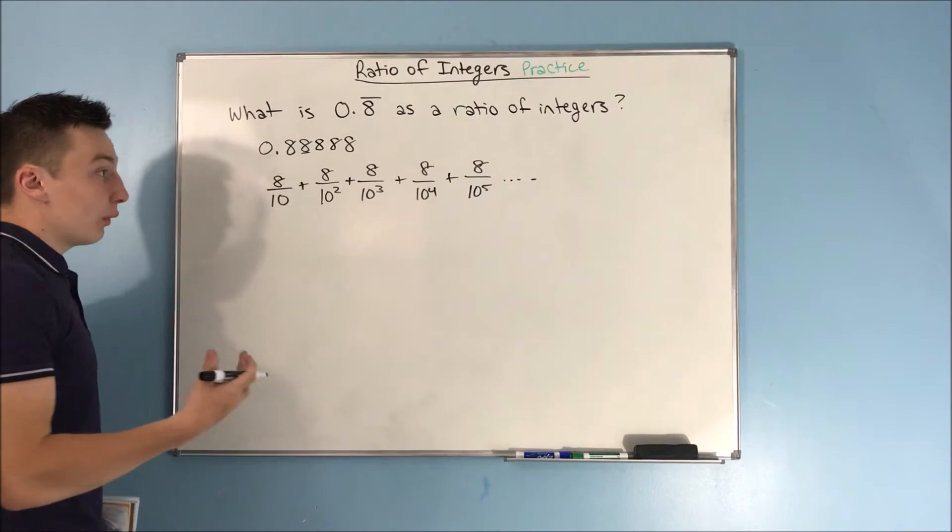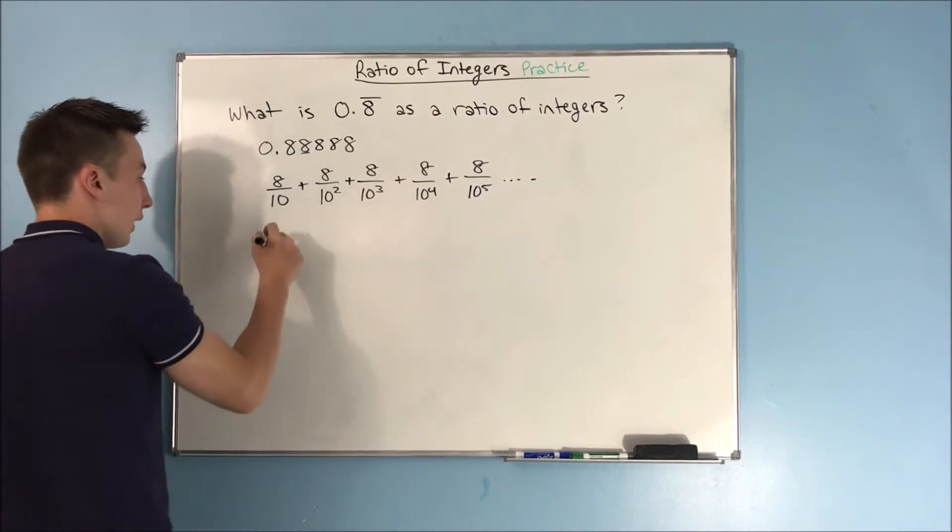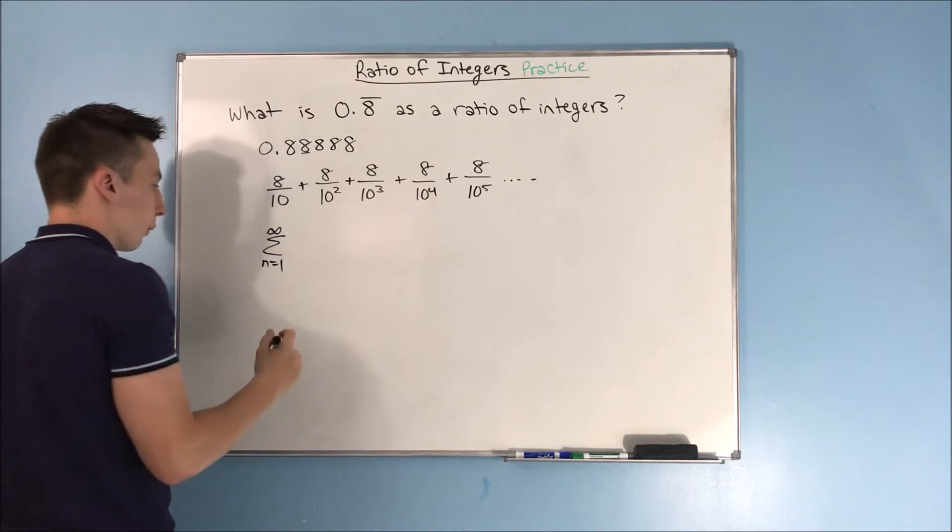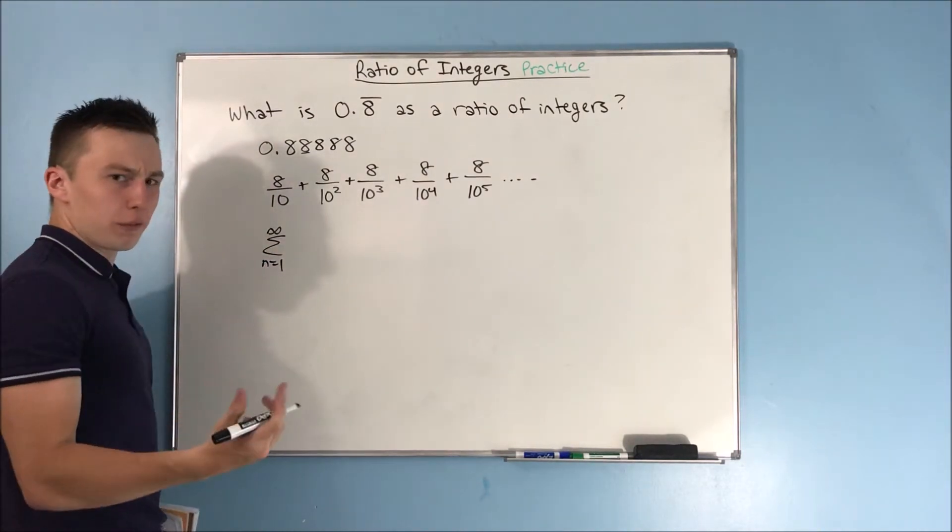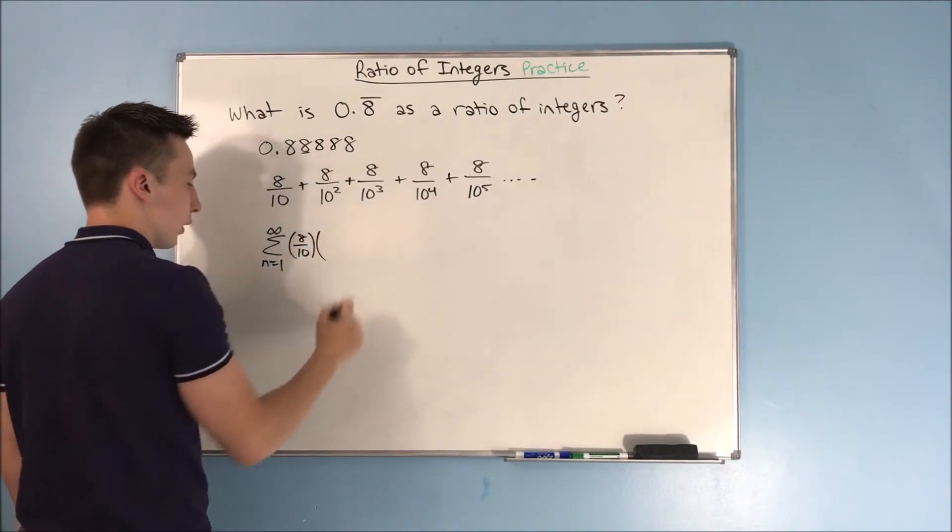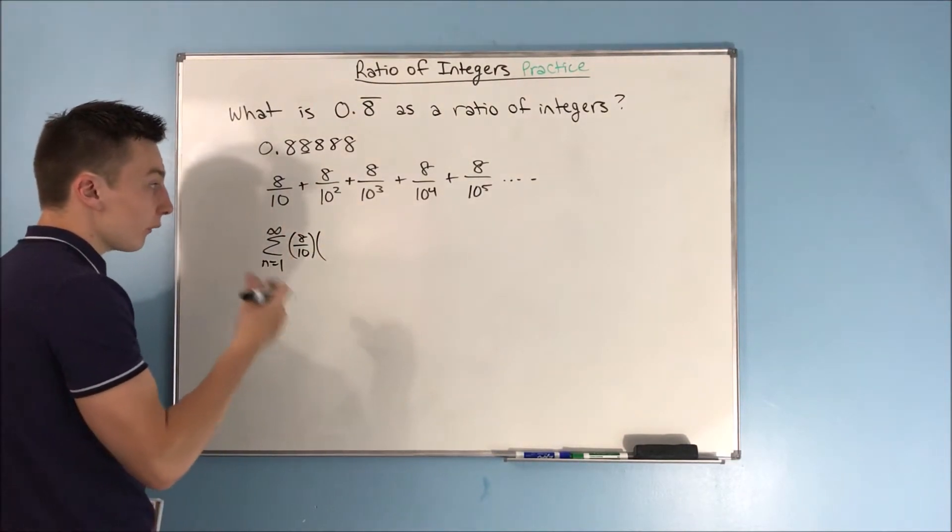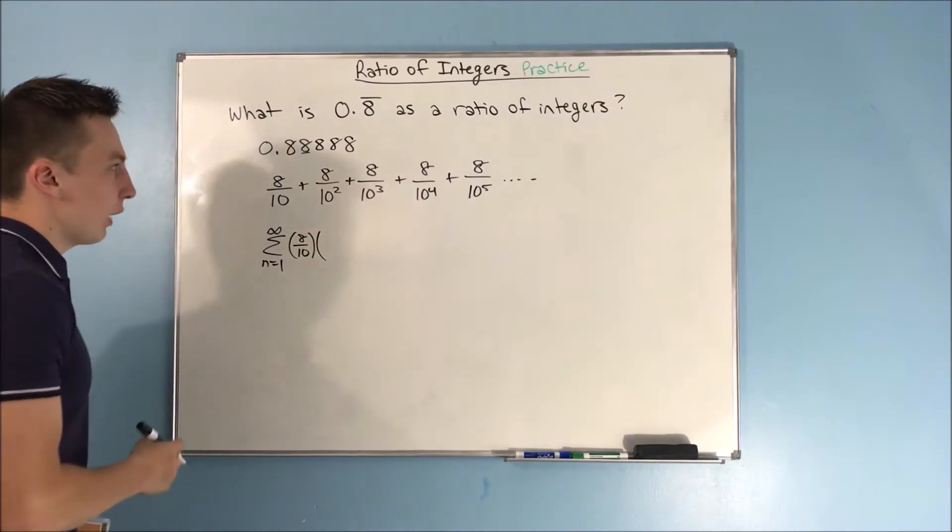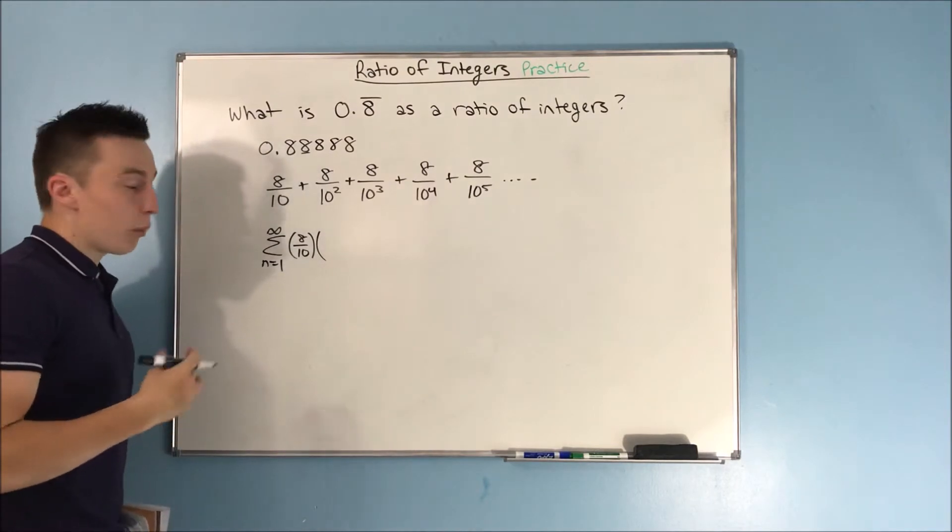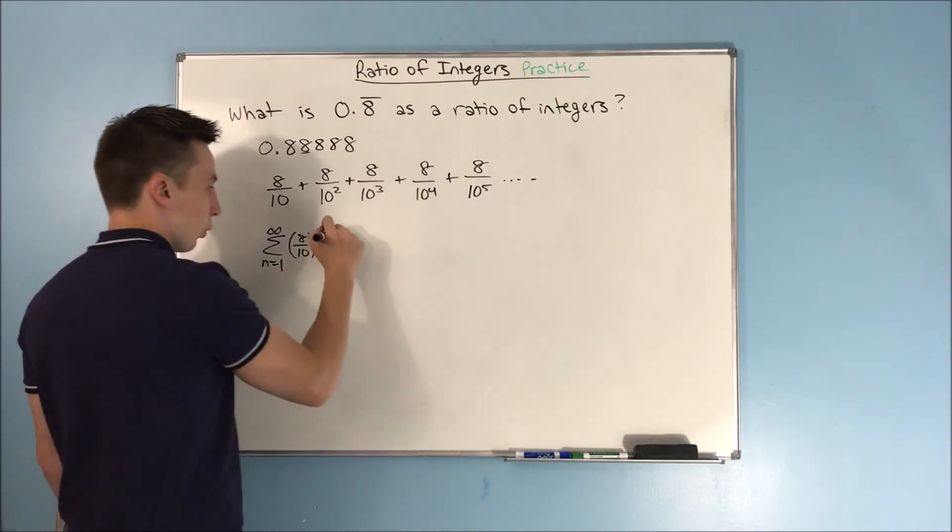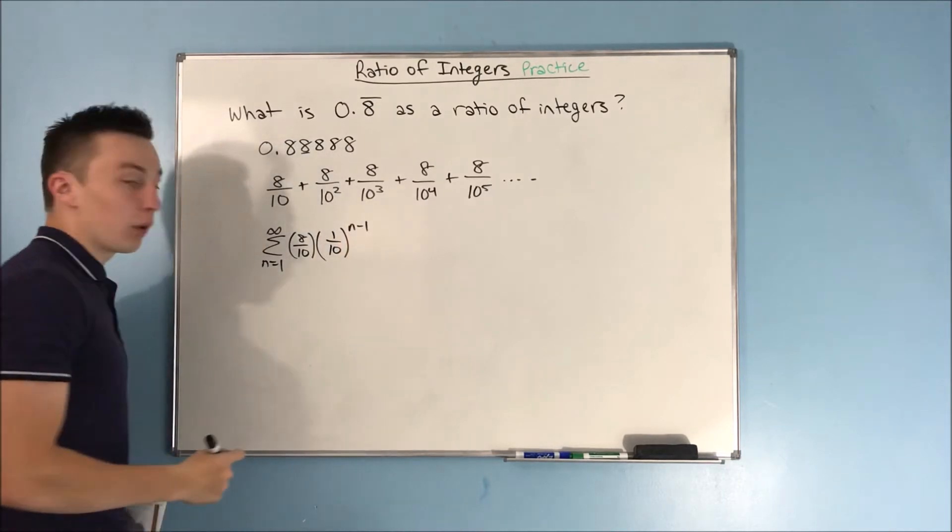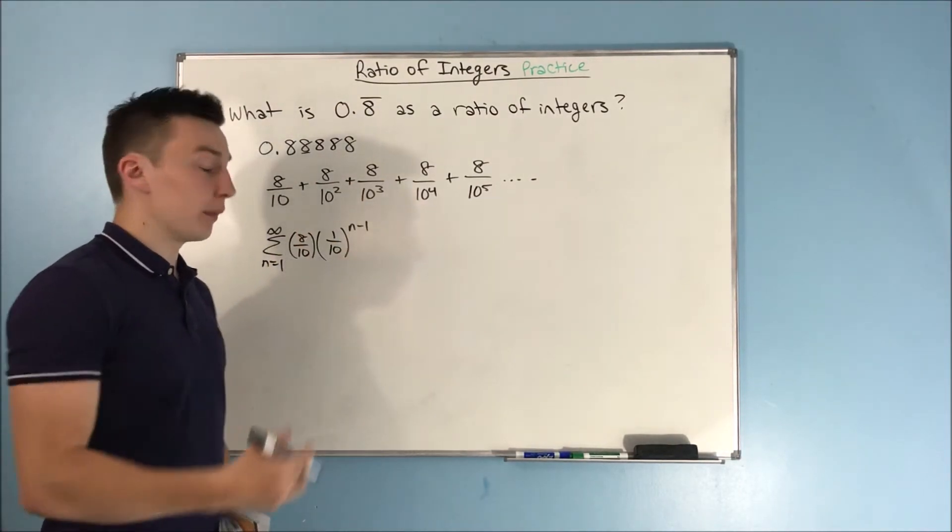So now let's put that into our a times r to the n minus 1 form. We get the sum from n equals 1 to infinity of, well, what's our first term? That's just going to be 8 over 10. That's going to be our a. Our first term is our a. What's our common ratio here? How do we get from this term to this term? We multiply by just 1 over 10. And we have to raise that to the n minus 1.